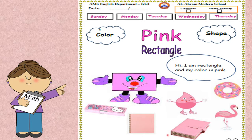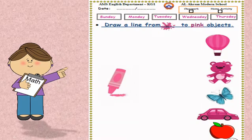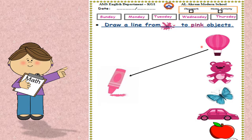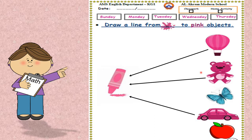And what shape is it? Rectangle. In this page, draw a line from the pink color to pink objects. This is our pink crayon. Where is the pink object? Balloon. Teddy. Car. Do you remember what is the first sound in the word car? Car. K.